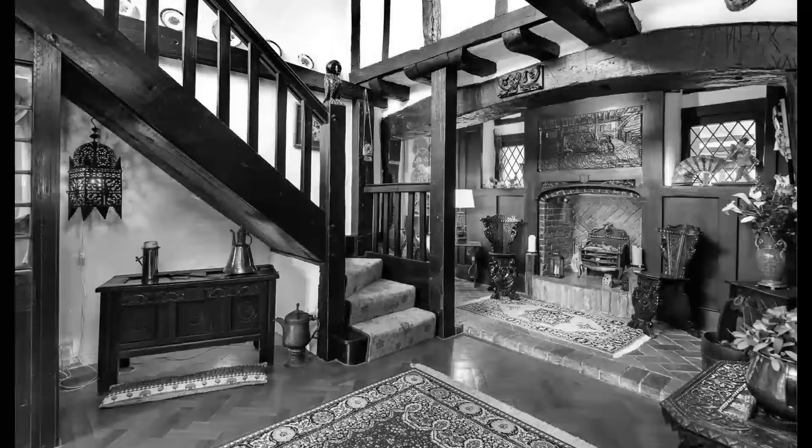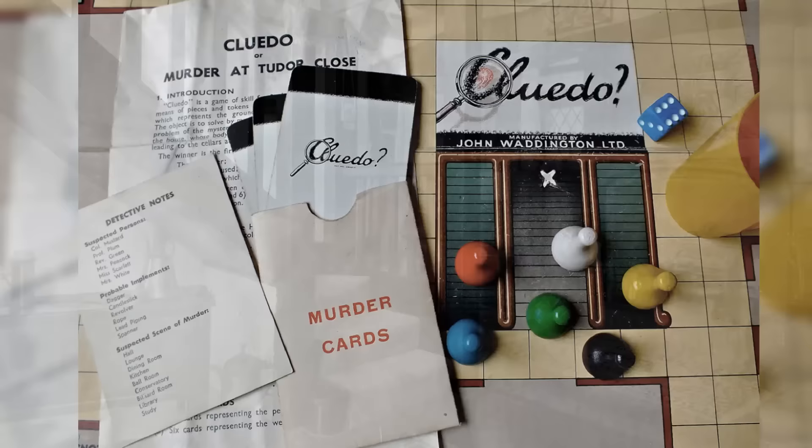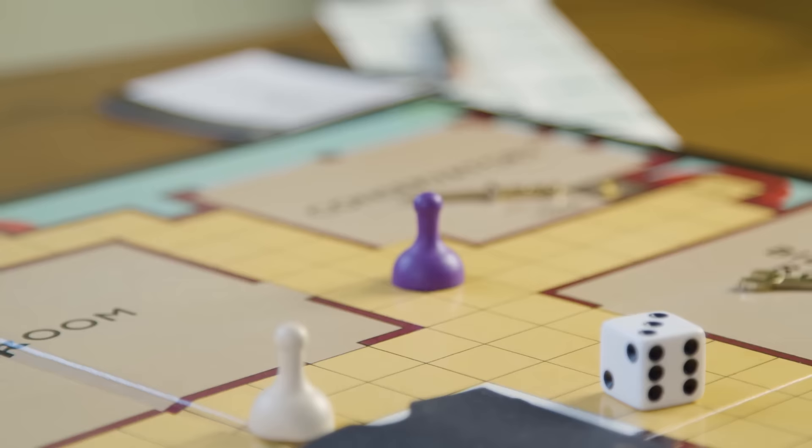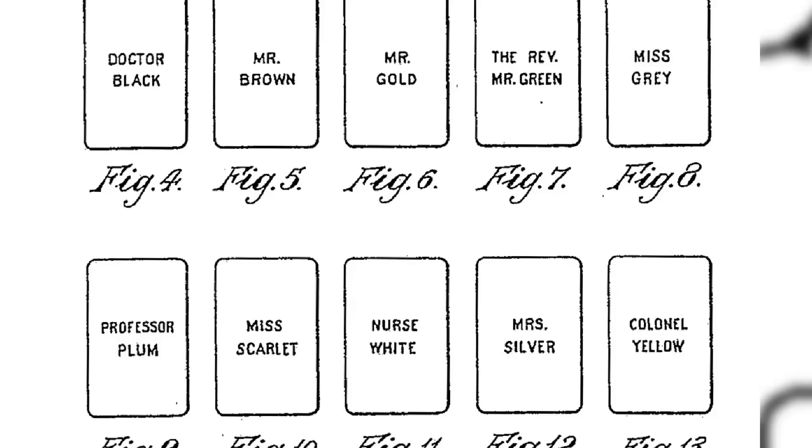Despite being granted a patent in 1947, the game's official launch in the United Kingdom was delayed until 1949 due to post-war shortages. Notably, there were several differences between the original game concept and the version finally published in 1949. Pratt's original design featured ten characters, including Mr. Brown, Mr. Gold, Miss Grey and Mrs. Silver, who were later eliminated. Originally, the game encompassed eleven rooms, including the gun room and cellar, which were removed.